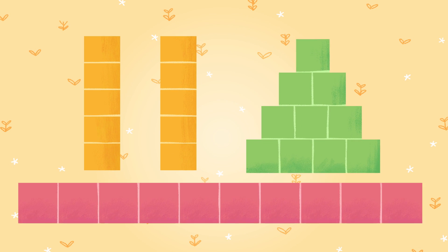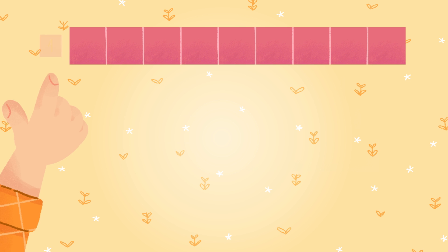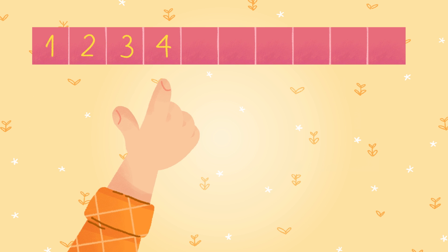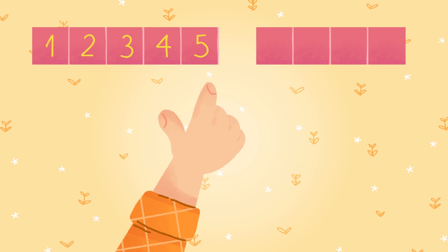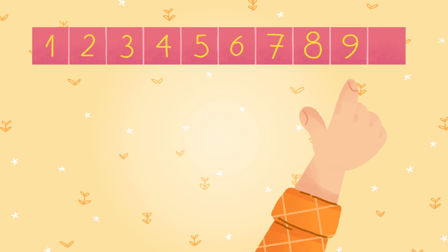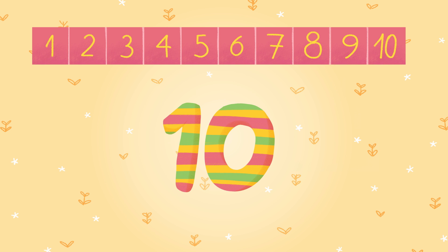Each of these blocks are in a group of 10. Even though the groups have a different shape, we can count and see that they each have 10 blocks: 1, 2, 3, 4, 5, 6, 7, 8, 9, 10. There are 10 red blocks in a line.